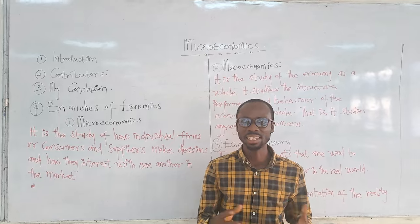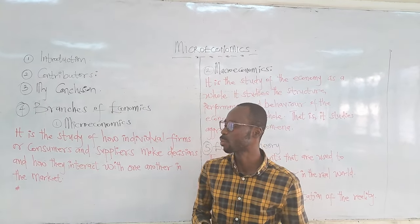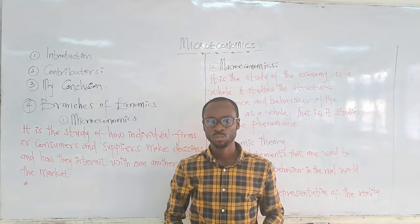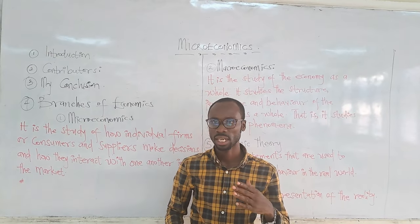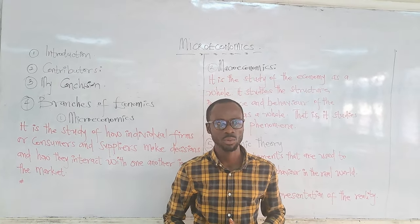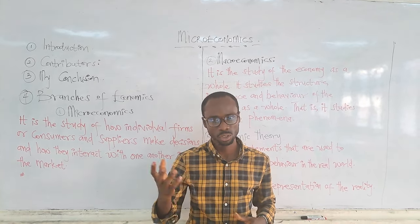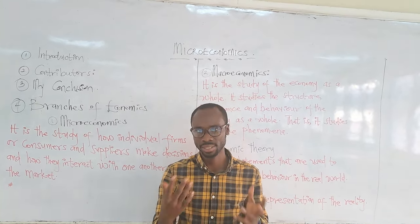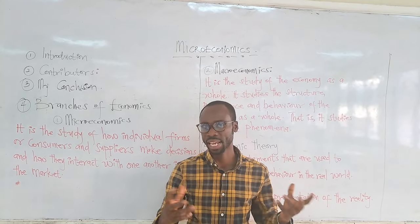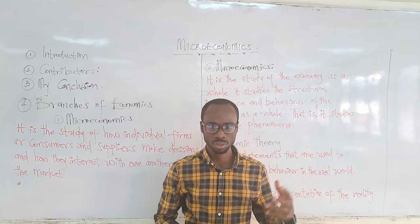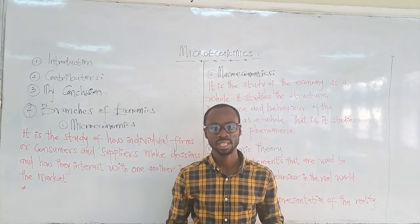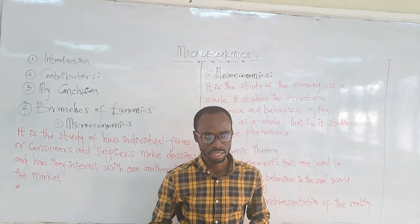That is the reason why some contributors came in. We have Alfred Marshall, we have Lionel Robbins, we have Samuel Sen, we have Adam Smith. You can read on them and what they said about economics. Some made use of terms like ends, wants, scarcity, limited resources.